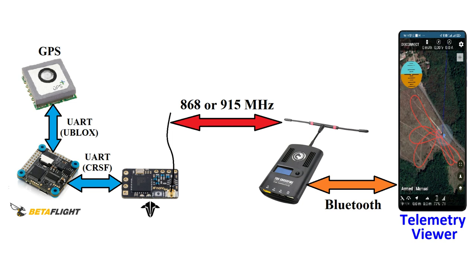As you can see, the drone's GPS position is sent to your phone through a Crossfire telemetry connection and a Bluetooth link. But in order to do all of this, the TBS Crossfire TX module must be the full version — the one that embeds a Bluetooth component.